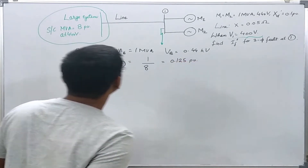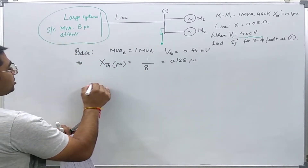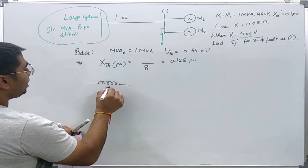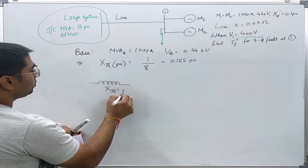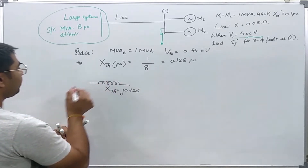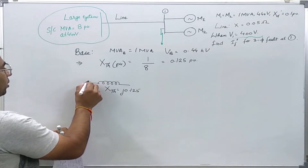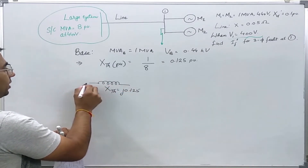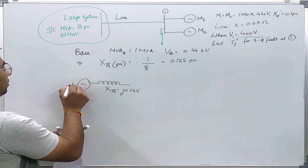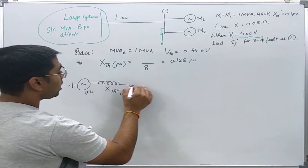This power system can be approximated by a reactance equal to j0.125 per unit at a voltage of 1 per unit.